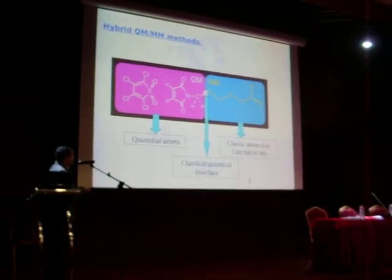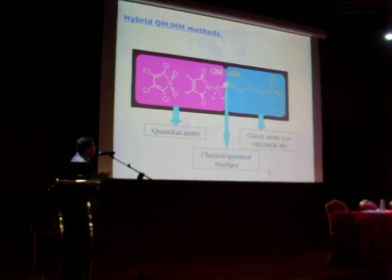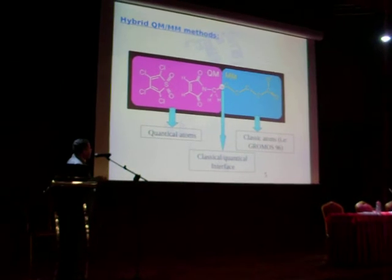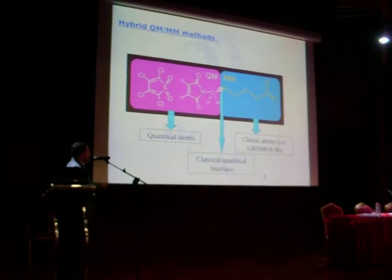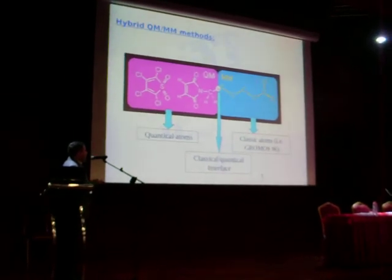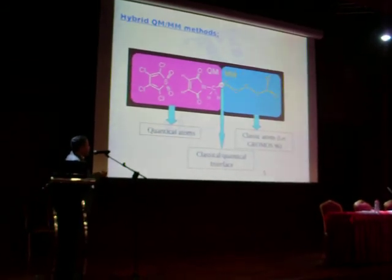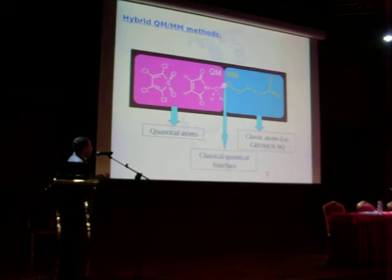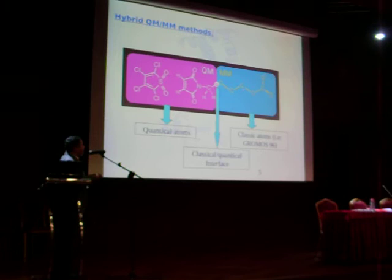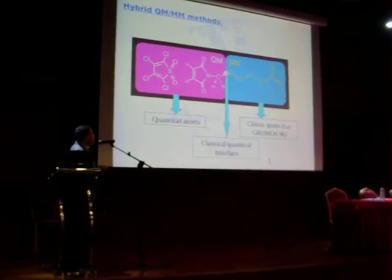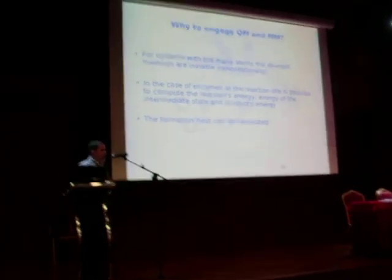In QMMM methods, we have two sides: one composed by the quantum atoms, and the other side with the classical atoms. These sides are separated by an interface, which is a link atom, considered hydrogen atoms for the quantum side and dummy atoms for the classical side.